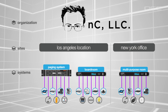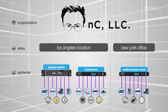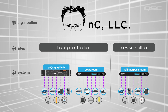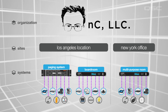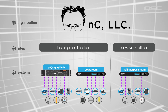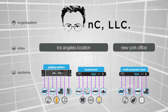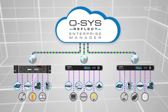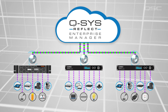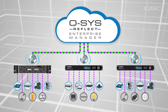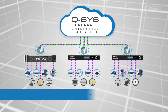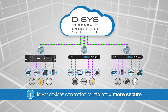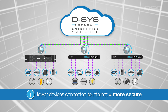Every core automatically acts as a system-level aggregator for data from its own peripherals. This means that when it comes to connecting all of this to the Reflect Cloud, the only device that requires an internet connection is the Q-SYS Core. There are no extraneous links between your individual peripheral devices and the cloud, which means fewer device connections to the internet and increased system security for your installation.